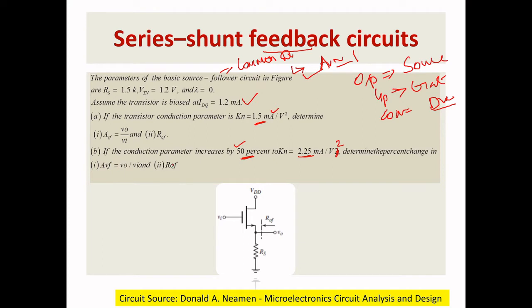AVF = V0/VA, and R0F. When you look at this circuit, the input is at the gate and the output is taken from the source point. RS is the feedback resistance and this is a biasing circuit. To identify the feedback type, here is a shortcut hint: when the output is taken from the source and the feedback is also taken from the source, if both are at the same terminal, we say that is a voltage or shunt sampling.